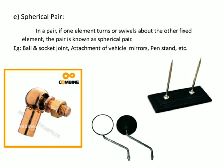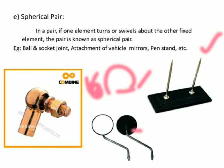A spherical pair is one in which one element turns or swivels about the other fixed element. Examples include a ball and socket joint, attachment of vehicle mirrors, and a paint stand. When one element is fixed at one point and the other turns around it in multiple directions, the pair is known as a spherical pair.